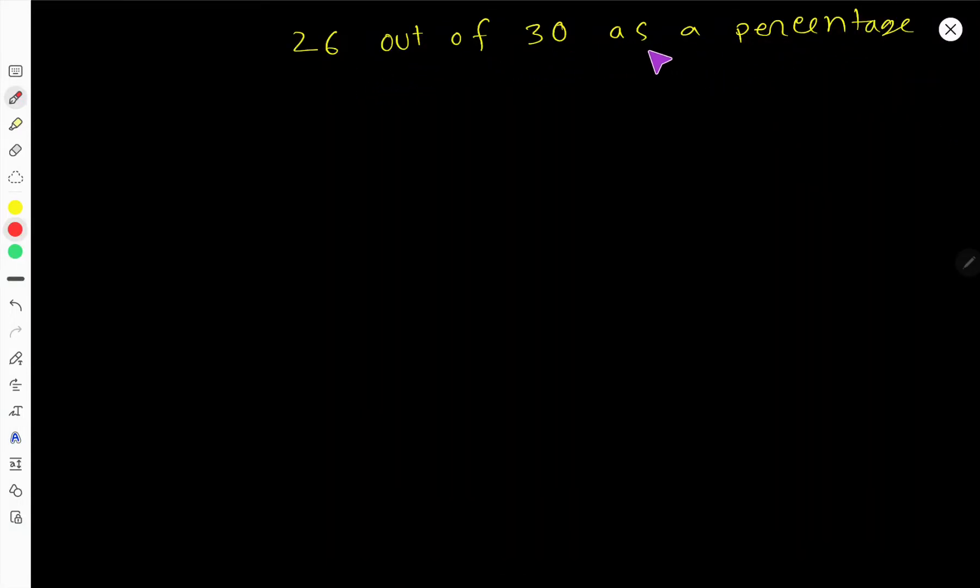26 out of 30 as a percentage. We are translating this expression: 26, then 'out of' means this division sign or fraction sign, then 30. That is, we need to express this fraction as a percentage.